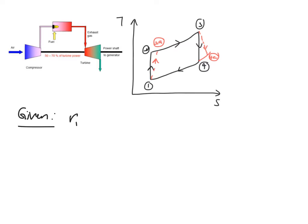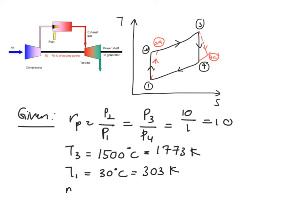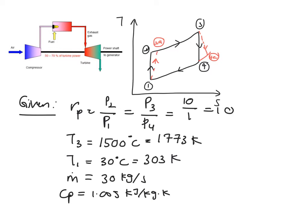Now let's take what has been given to you. You have pressure ratio, which is your maximum pressure over minimum pressure — P2 over P1, or P3 over P4 — which is equal to 10. Your T3 is equal to 1500 degrees C, which you need to convert into Kelvin, giving 1773 K. Next, the inlet temperature to your compressor is 30 degrees C, equivalent to 303 K. And your mass flow rate M-dot is equal to 30 kg per second. Your Cp throughout the process is 1.005 kJ per kg·K.